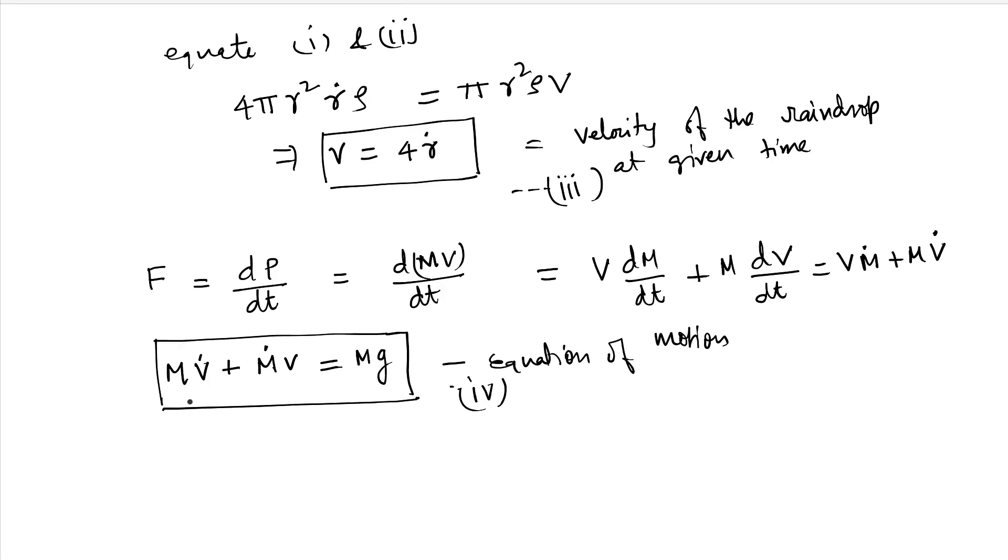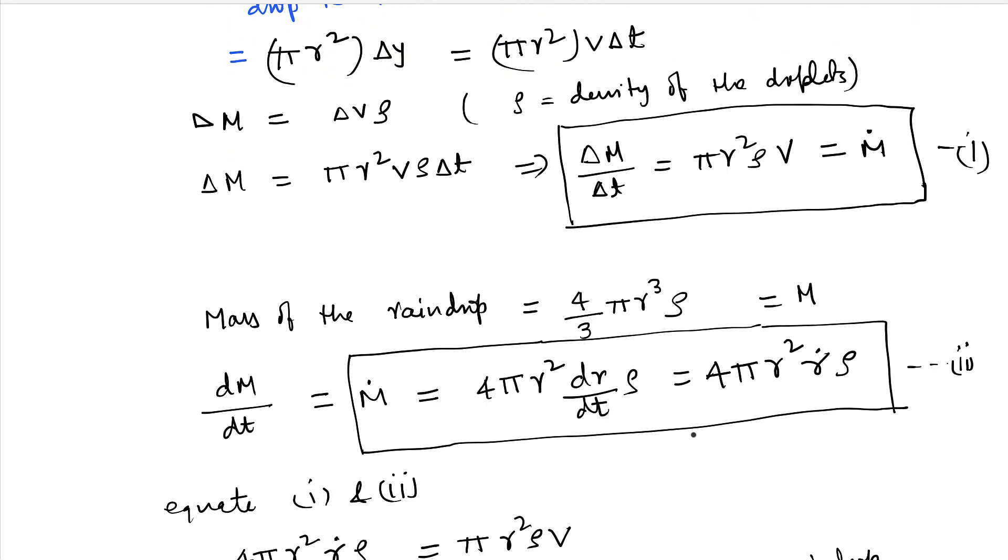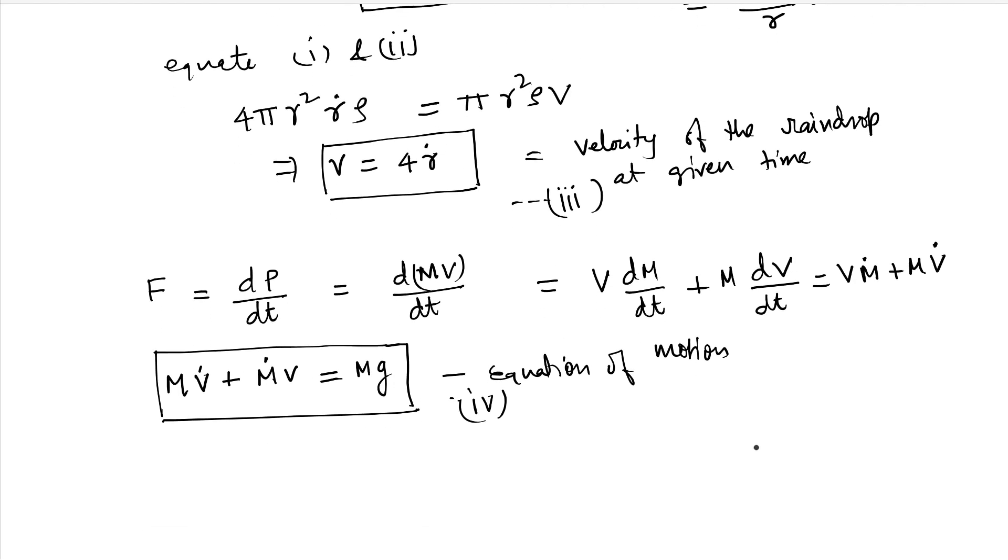Now, all we need to do is substitute the V dot and m dot. From here, if you see, this m dot, we can also write here as 3m by r r dot. If we take m as 4 by 3 pi r cube rho and we replace the 4 pi r square with 3m by r rho, so we'll get this. So we can use this equation for m dot.